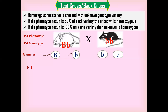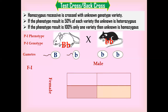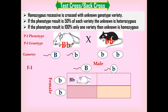To calculate the F1 generation, we use the Punnett square. On one side we place the male's two different types of sperm, and on the other side the one type of egg. The egg with lowercase b can fertilize with a sperm carrying capital B, producing a heterozygous white variety. The egg with lowercase b can also fertilize with a sperm carrying lowercase b, producing the homozygous recessive black variety.